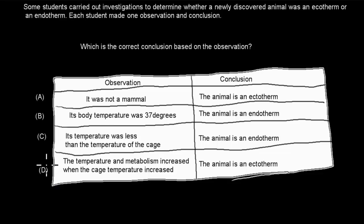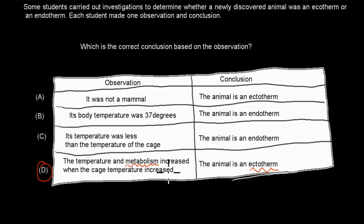The correct answer is D. The observation was that body temperature and metabolism both increase when the cage temperature increases — that means its temperature matches the ambient temperature, which is ectothermic. A is wrong because even if it's not a mammal, it could be a bird, so we can't conclude it's an ectotherm just from that. B is wrong — knowing the body temperature is 37°C doesn't confirm endothermy, since it could just be 37°C outside.